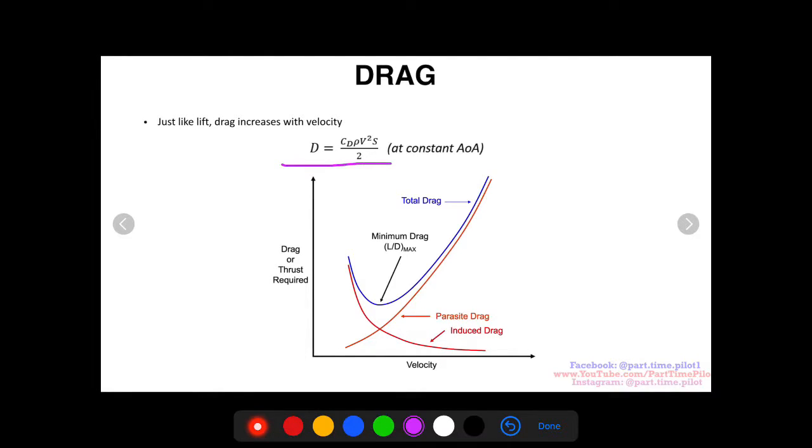Here we have the drag equation. As you can see, velocity up here in the top, velocity squared. So as velocity goes up, this whole term is going to go up and our drag is going to go up. However, it's a little bit more complex. It doesn't just go straight up linearly because we have parasite drag and induced drag, which acts differently in terms of velocity.